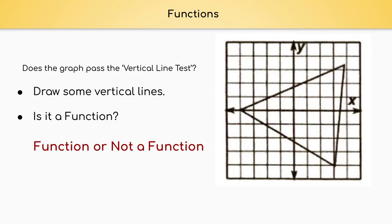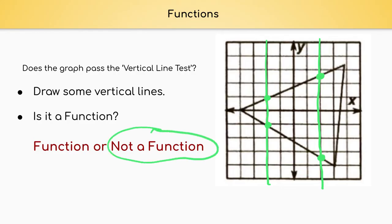Let's take a look at some graphs. Here is our first graph — is this a function or not a function? Let's use our vertical line test. I'm going to draw a vertical line right here, and my vertical line goes through more than one point — it went through two points. Even if I drew another one over here, it goes through two points, which is more than one point. If our vertical line goes through more than one point, it is not a function.